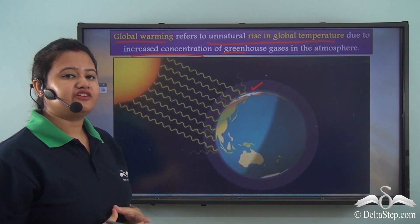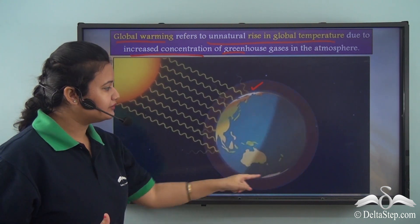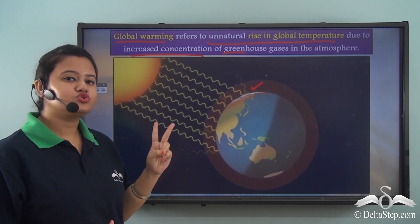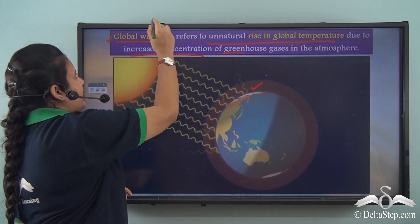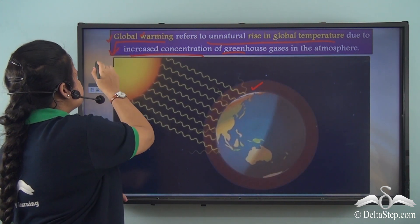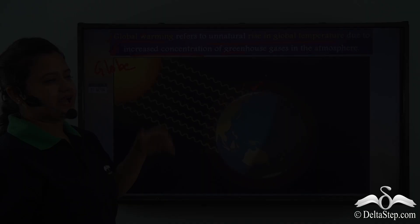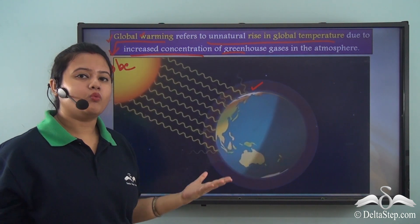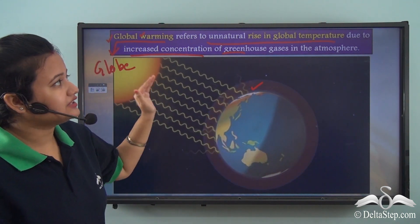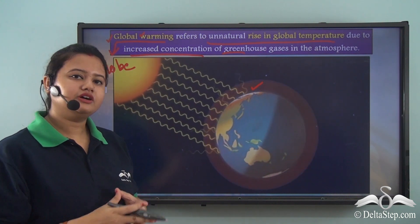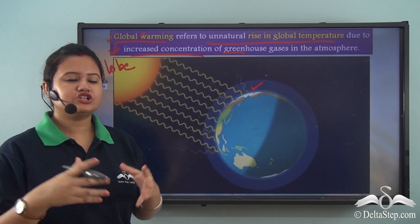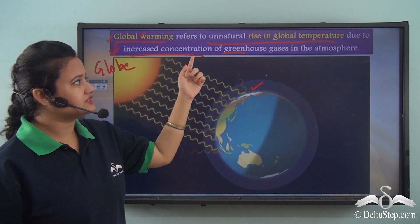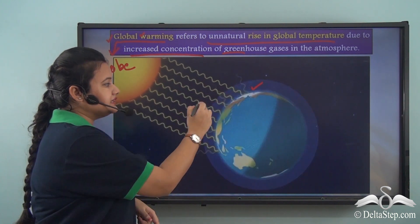Global warming refers to the overall rise in the temperature of the Earth. The word global warming can be separated into two parts: global and warming, where global means globe or the Earth. So global warming refers to unnatural rise in the overall temperature of the Earth, and this unnatural rise occurs due to increased concentration of greenhouse gases in the atmosphere.